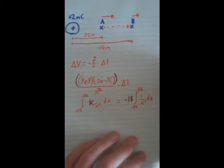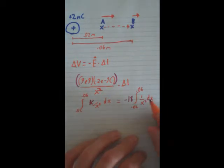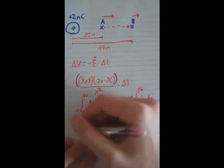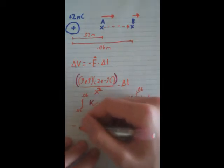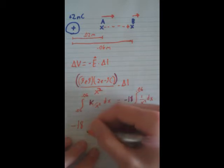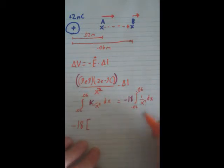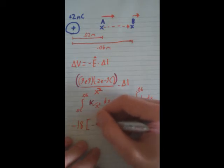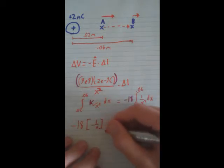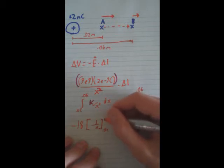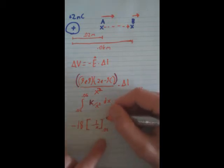So, now we have to integrate this. And, if you're savvy with your integrals, you'll know that the integral of 1 over x squared is negative 1 over x. And our bounds again, from .02 to .06.